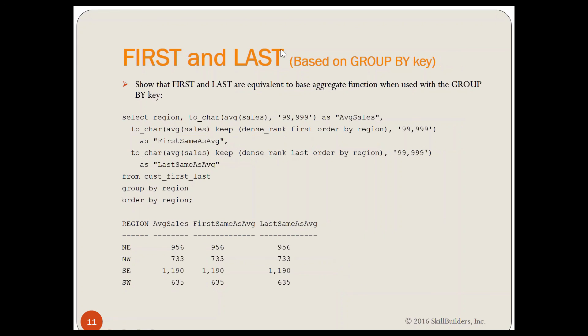Just to take a quick look at what it would be if I did first and last based on the group by column, same exact thing, but I'm saying dense rank first order by region, which is the same as my group by column. Well, if I order by region, this row is all northeast region. So my first and last is always northeast. It doesn't change it. So my average sales is the same as the first, is the same as the last. So that's really not giving me any functionality.